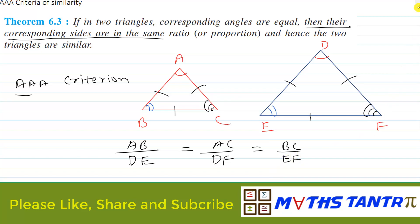In Theorem 6.3, what does it mean? Only if three angles — corresponding angles of two triangles — are equal, then those triangles will be similar. And if the triangle is similar, we know their sides will be proportional.